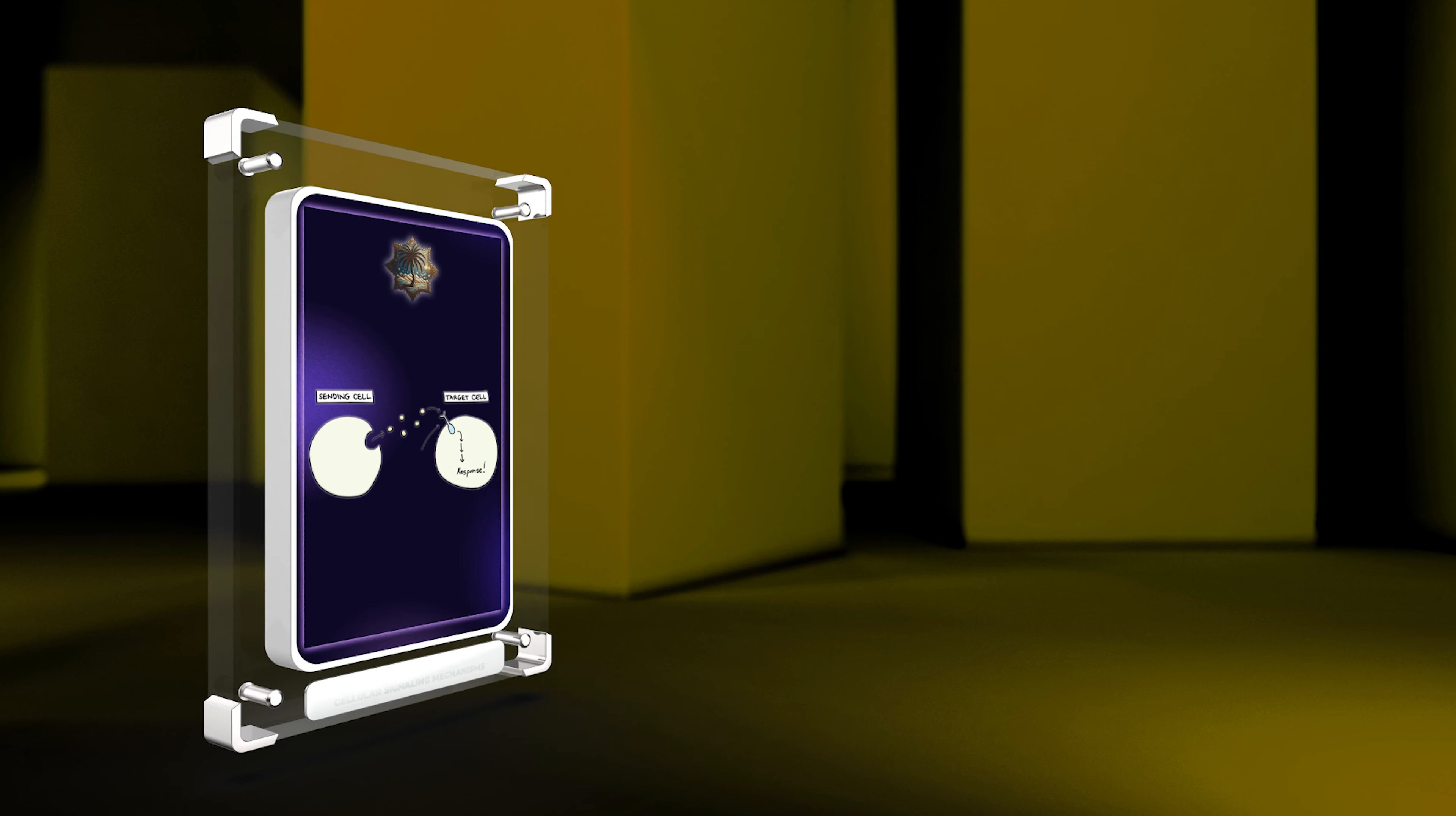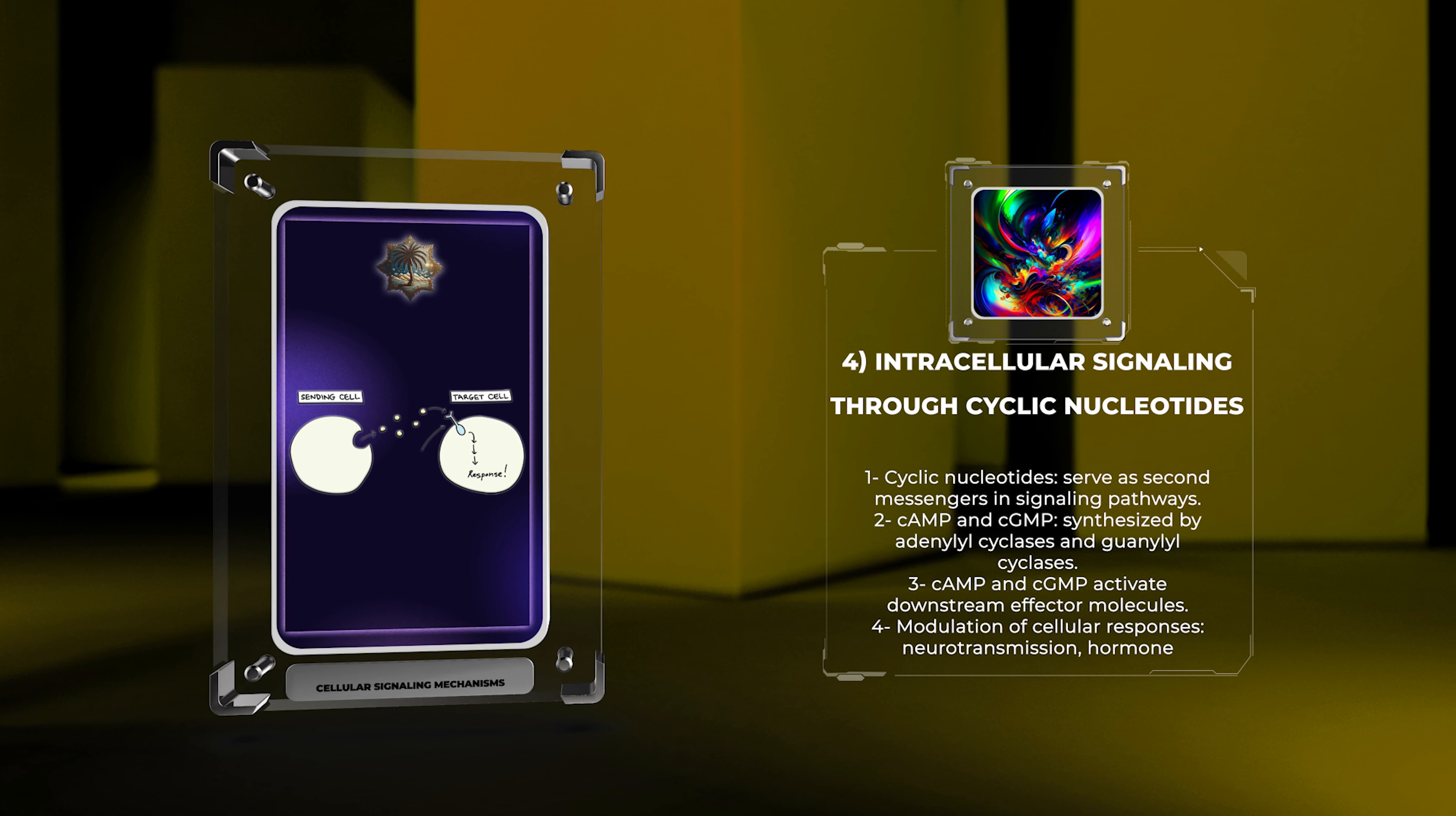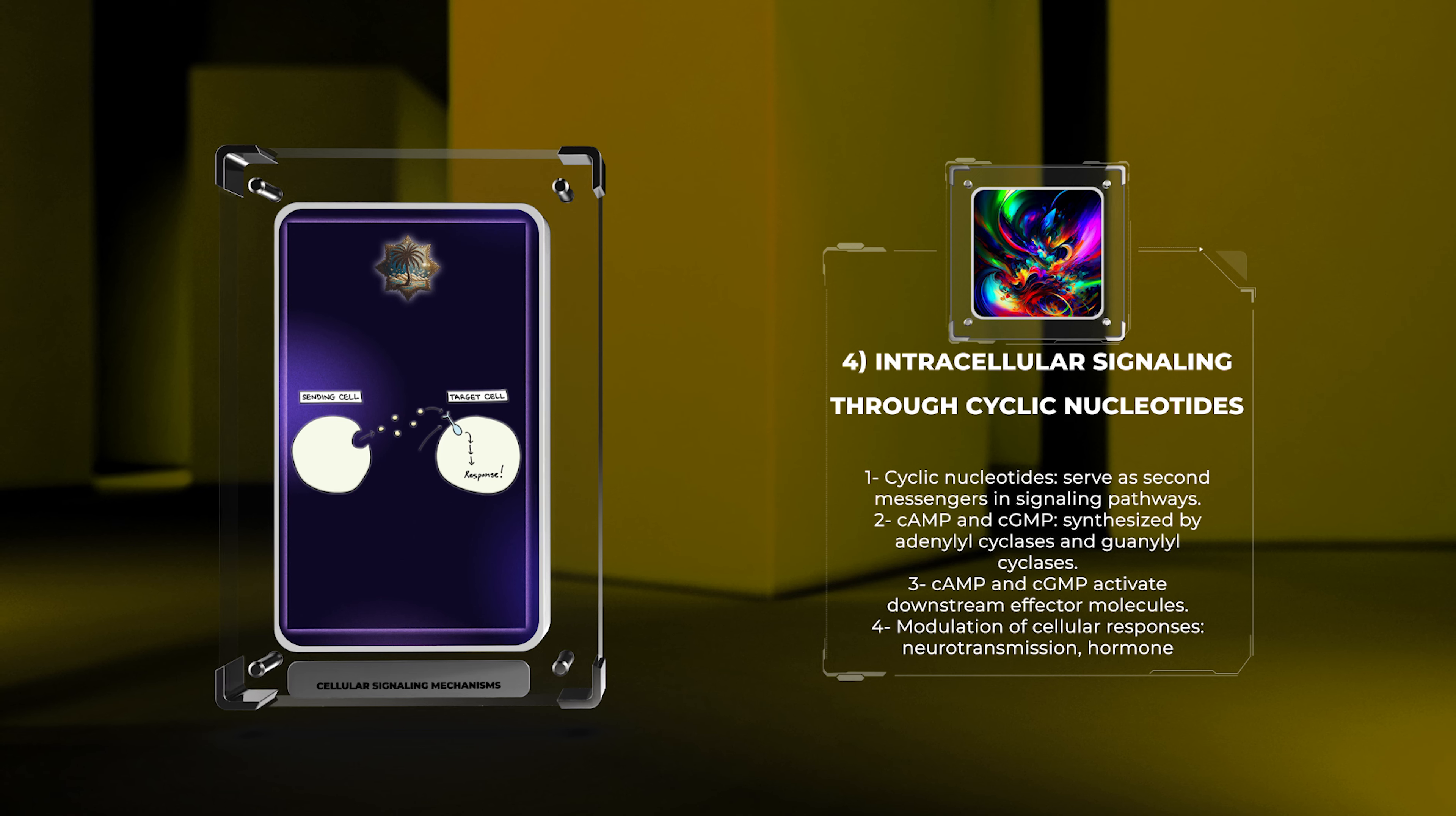Cyclic nucleotides, specifically cyclic adenosine monophosphate (cAMP) and cyclic guanosine monophosphate (cGMP), serve as critical second messengers in various signaling pathways. These nucleotides are synthesized by specific enzymes, adenylyl cyclases and guanylyl cyclases, respectively. They activate downstream effector molecules, such as protein kinases or ion channels, ultimately leading to the modulation of cellular responses, including neurotransmission, hormone secretion, and smooth muscle relaxation.